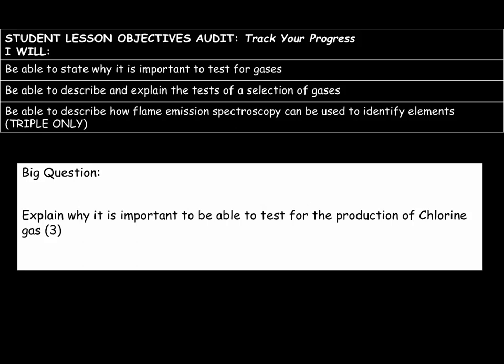In this tutorial, we will look at why it is important to test for gases, how to describe and explain the tests for a selection of gases, and how flame emission spectroscopy can be used to identify elements. That final part of the video will be for triple students only. Our big question today is to look at why it is important to be able to test for the production of chlorine gas.